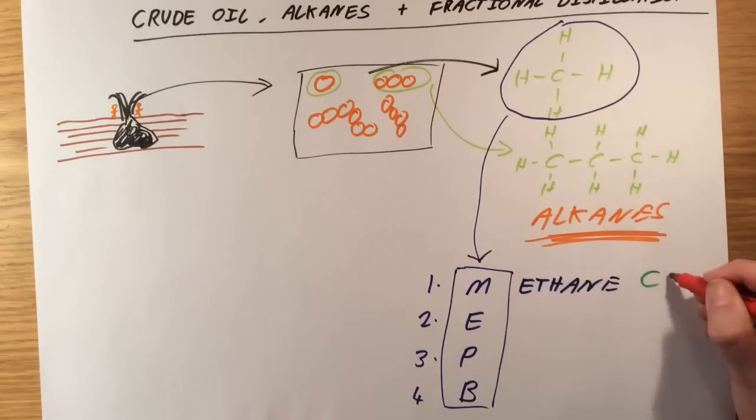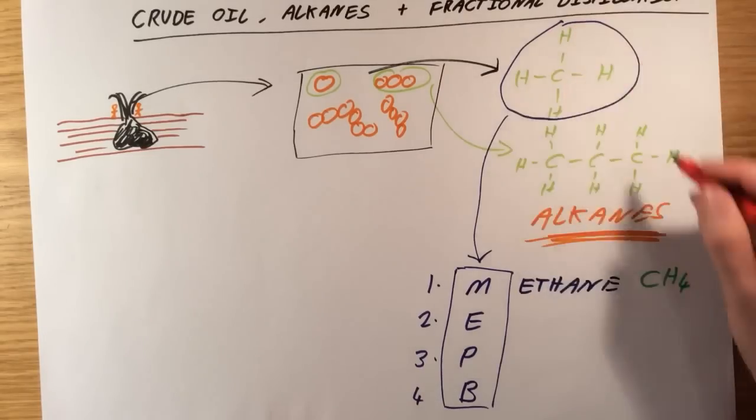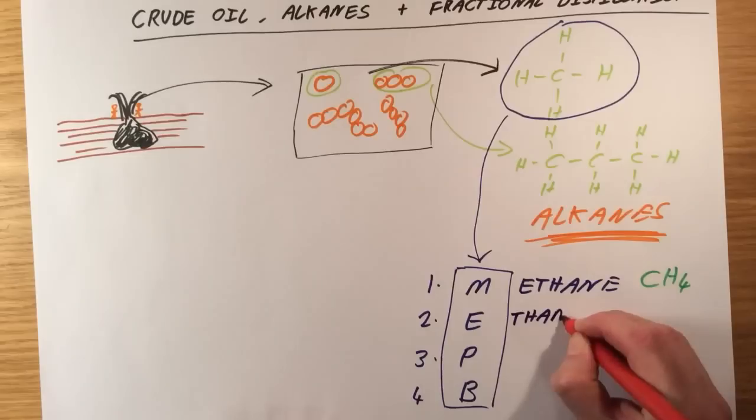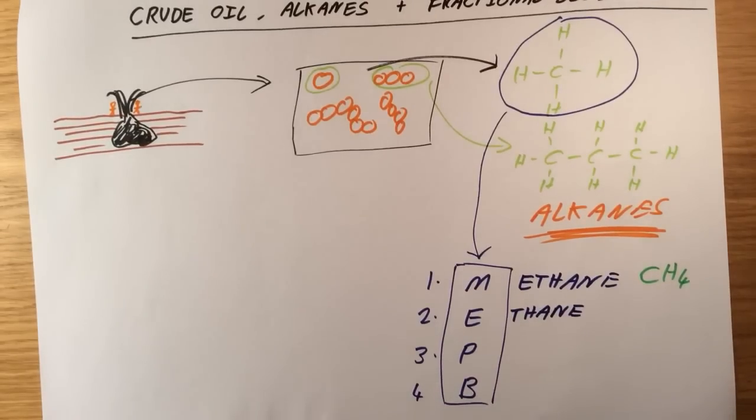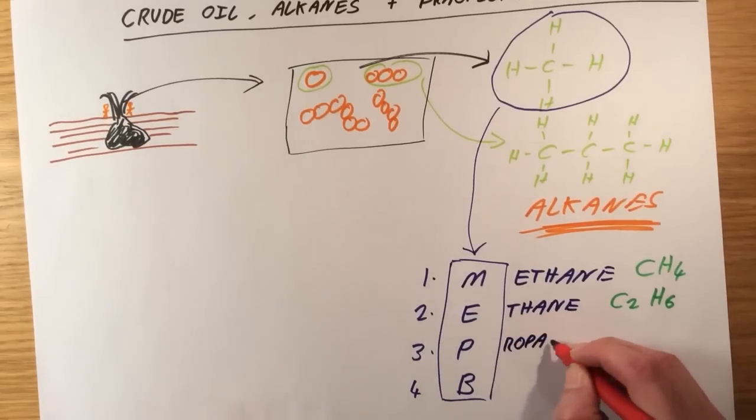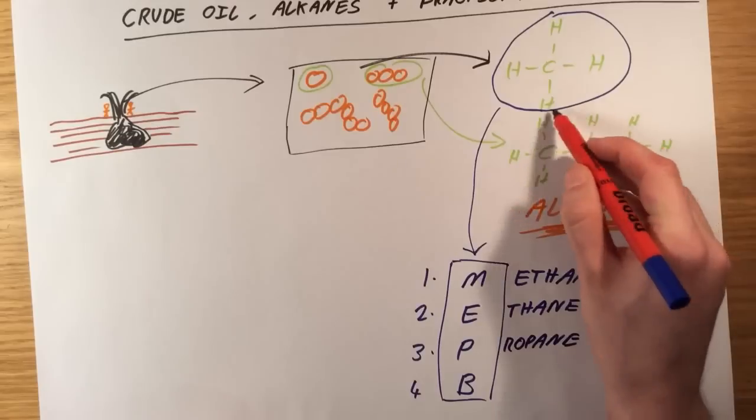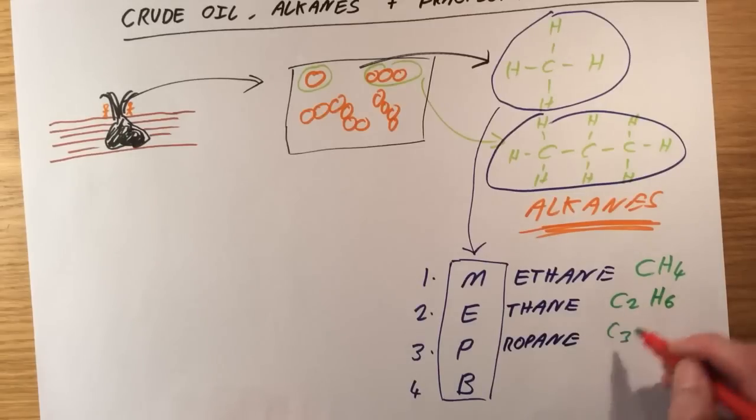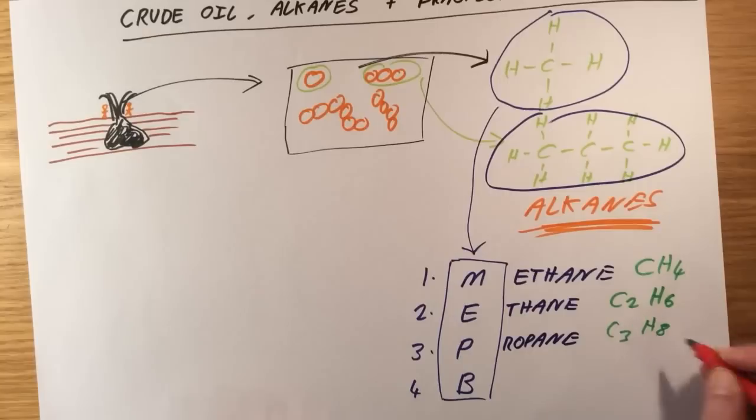That compound is methane. It has the formula C, one carbon, and four hydrogens. The second one is known as ethane. And if I were to draw that out, I would find that I would have two carbon atoms and six hydrogen atoms. The third one is called propane. And that is this one here. And if you have a look at this one, I've got three carbon atoms and eight hydrogen atoms.